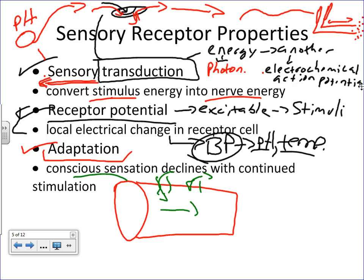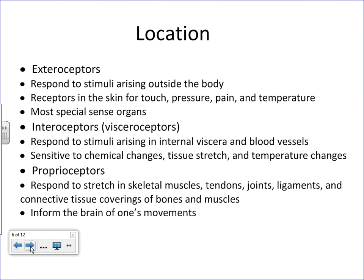Those are the major properties of sensory receptors. Now let's talk about the different ways we can classify receptors. There are three ways: by their location, by their modality, and by their structural complexity. Let's break each of those down individually, starting with location. The first group is exteroceptors, then interoceptors, and then proprioceptors.